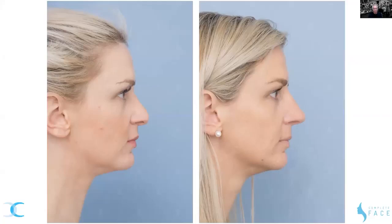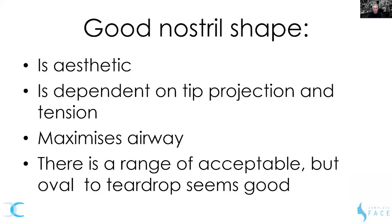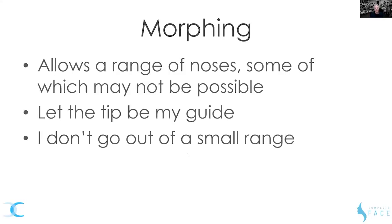The nostril shape is important in determining my tip projection and where I want to set my dorsum. Good nostril shape is aesthetic, dependent on tip projection and tension, and it maximizes the airway. Tension is important — if you have a tense nose you won't be able to pull it out sideways, and neither will the musculature. A good nostril shape maximizes the airway; the teardrop shape seems fairly good. However, morphing allows a range of noses, some of which may not be possible, so I let the tip be my guide and don't go out of that very small range, otherwise I get into trouble by predicting something I can't achieve.